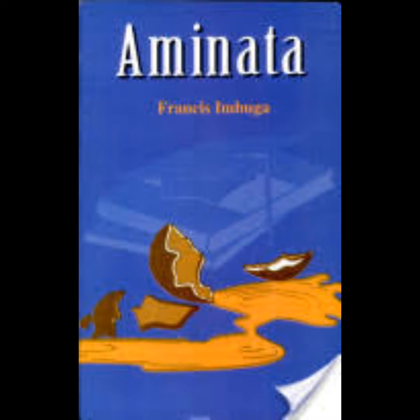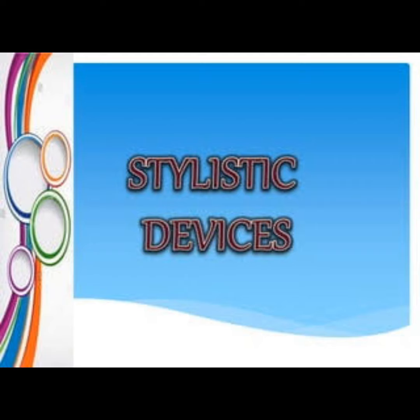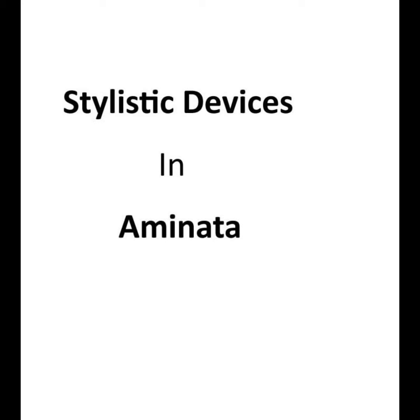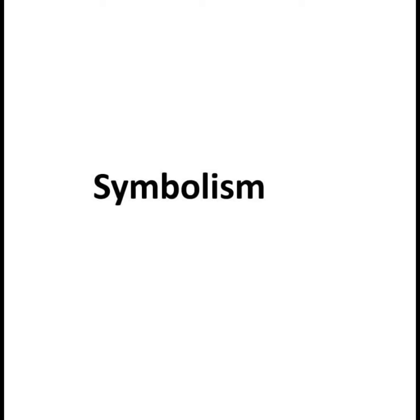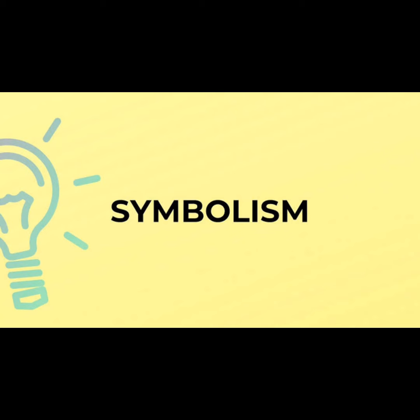Before I begin, I'd like to remind you to always explain how different styles contribute to thematic concerns and how they reveal character traits of different characters in the play or in any text you've been given. That is very important. The first stylistic device we'll look at is symbolism — in Aminata, Imbuga uses symbolism to shed light on different themes and characters in the play.